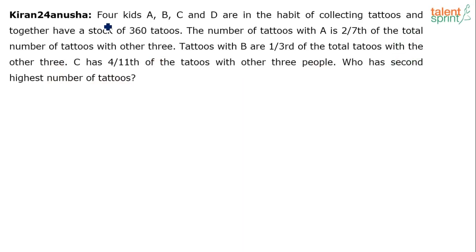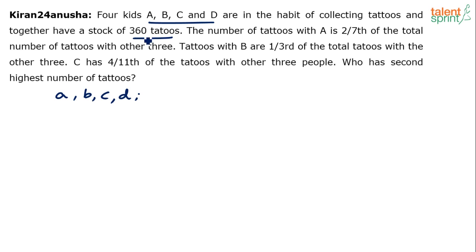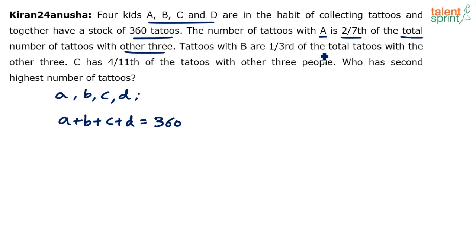So see what needs to be done here. Four kids - let's assume the number of tattoos with each of them is A, B, C, D respectively. A has got A tattoos, B has got B tattoos, C has got C and D has got D tattoos. Now they together have a stock of 360 tattoos, meaning the sum of A, B, C, D is 360. The number of tattoos with A is two-seventh of the total number of tattoos with the other three, which means A is equal to two-by-seventh of B plus C plus D.